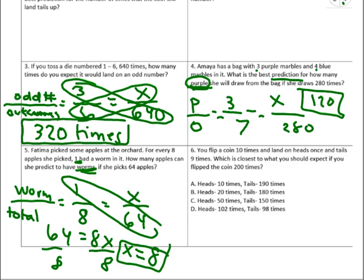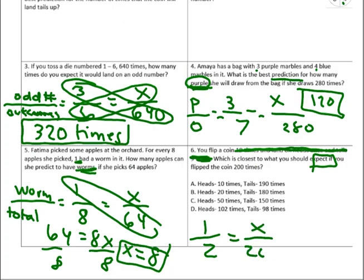Number six: you flip a coin 10 times and it lands on heads once and tails nine times. Normally we'd expect 50-50, but that's way higher. The question asks which answer is closest to what you should expect if you flip the coin 200 times. Since it says 'expect,' that's theoretical. We can ignore the experimental results from the first sentence since it doesn't say based on that rate. On a coin it's always 50-50: one over two equals x over 200.